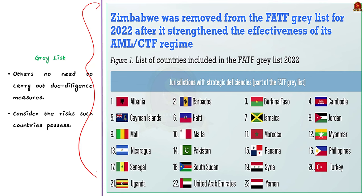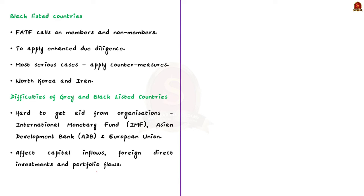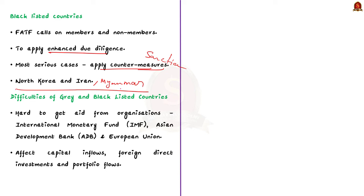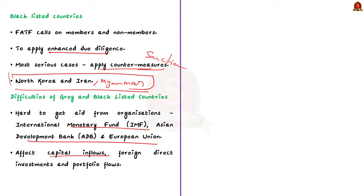The major difference between gray and blacklisted countries: for blacklisted countries, FATF calls on members and non-members to apply enhanced due diligence, and in the most serious cases, members are told to apply countermeasures such as sanctions. Currently, North Korea, Myanmar, and Iran are on the blacklist. When countries are listed on the FATF blacklist, it is hard to get aid from organizations like the IMF, Asian Development Bank, and European Union, and it may also affect capital inflows via foreign direct investment or portfolio investment.